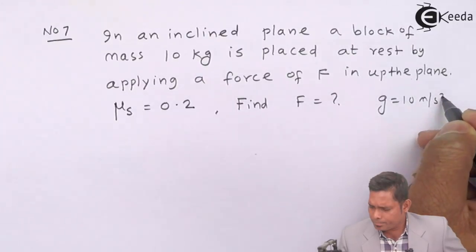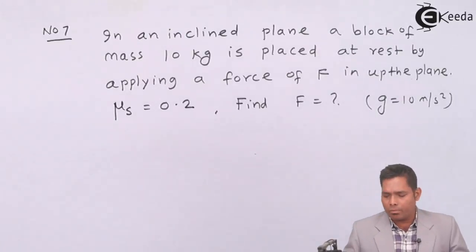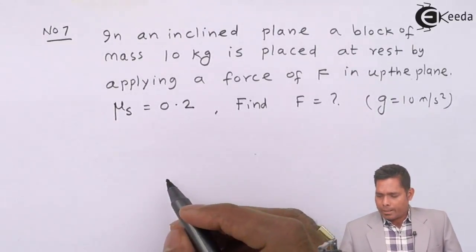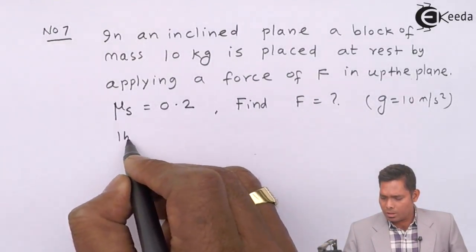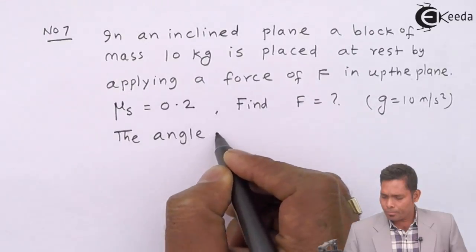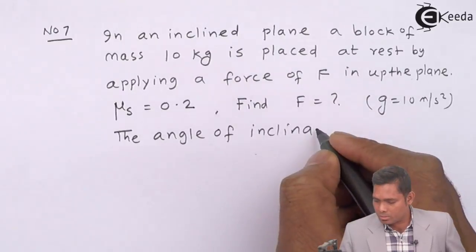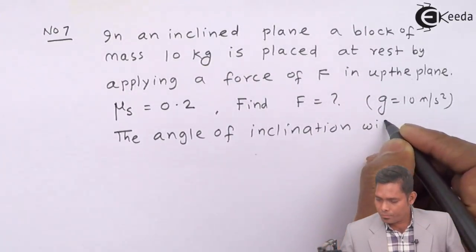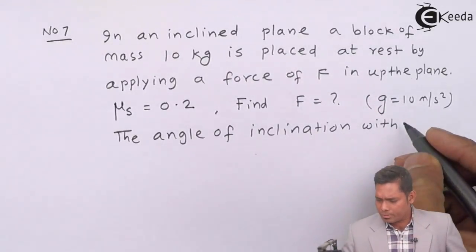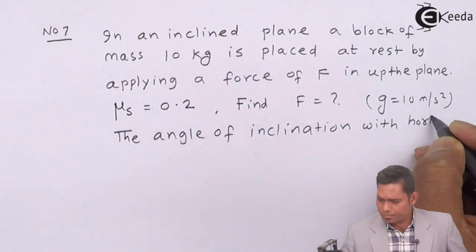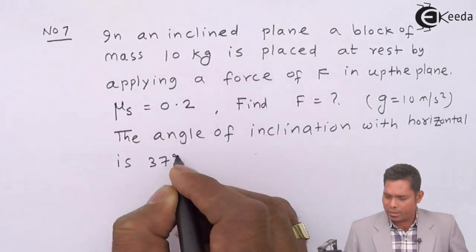G is 10 meter per second square — that you will always take. The angle of inclination with the horizontal is 37 degrees. So now let us solve the question.